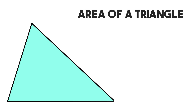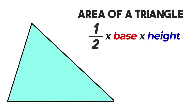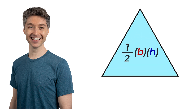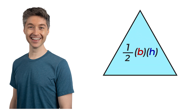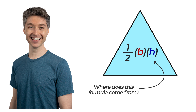Why is the area of a triangle one half base times height? Maybe you're like me and you memorized this formula as a kid, but you never really took the time to understand why this is true. Where does this formula come from?